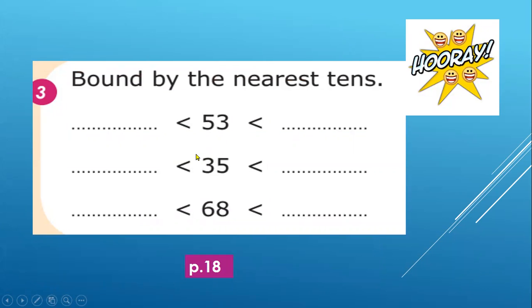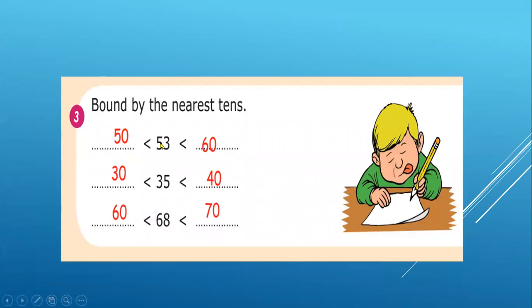Bound by the nearest tens. Now open page 18, exercise 3. The same steps. 53 between 50 and 60. 35 between 30 and 40. 68 between 60 and 70. Write down the answers on your book.